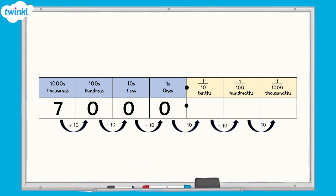As we move right across the place value chart, each column is worth 10 times less than the column before. So as the 7 moves across each column, its value becomes 10 times smaller, from 7 thousands, to 7 hundreds, to 7 tens, to 7 ones, to 7 tenths, 7 hundredths, 7 thousandths, and so on.